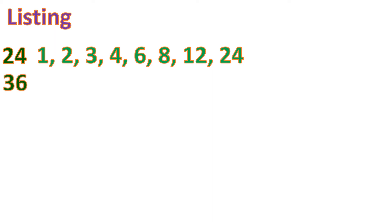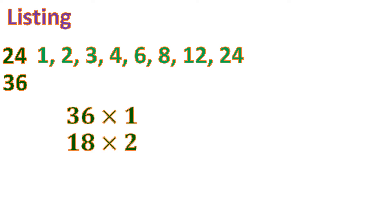Next, we find the factors of 36. Let's find all the pairs of 36: 36 times 1, 18 times 2, 12 times 3, and 9 times 4. All these pairs result in a product of 36.